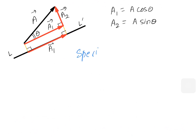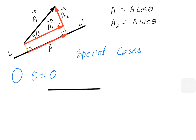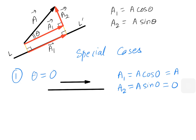Let's discuss some special cases. The first case is when theta equals 0, meaning the line and the vector are parallel. The component along the line is A1 = A cos 0 = A, since cos 0 is 1. The component perpendicular to the line is A2 = A sin 0 = 0. So when the vector is parallel to the line, the component equals the vector itself: A equals A1 vector.